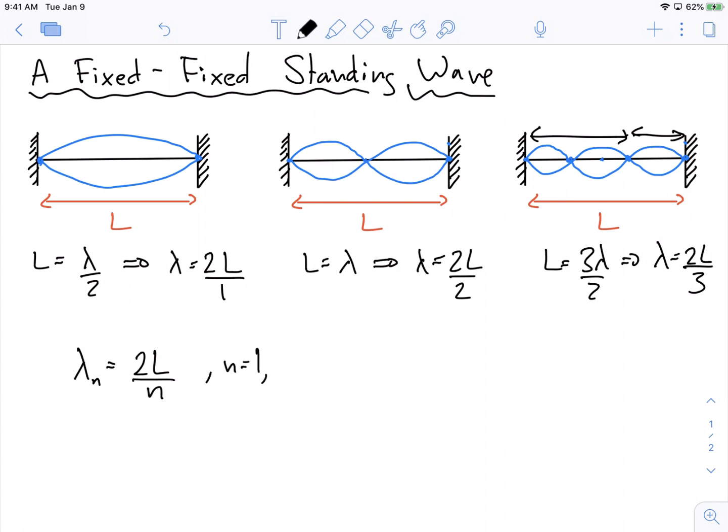And n is equal to one, two, three, etc. And it just goes and goes and goes and goes. So this is important enough to have a box around it.